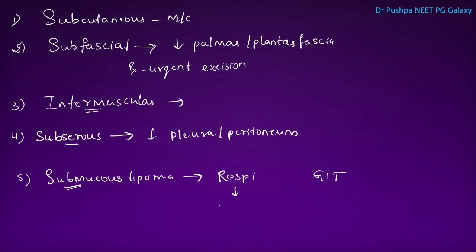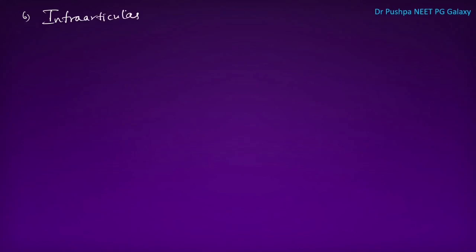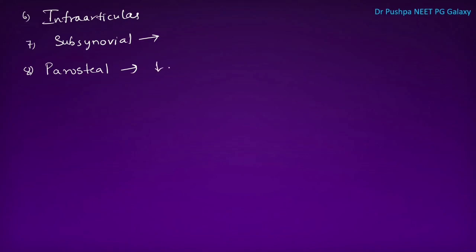In the respiratory tract, submucosal lipoma can cause respiratory obstruction, whereas in the intestine it can cause intussusception. Intraarticular lipoma is present within the joint and is rare. Sub-synovial lipoma is deep to the synovial membrane. Parosteal lipoma is present under the periosteum of the bone.